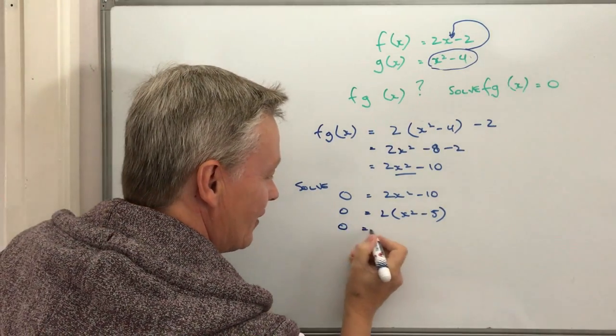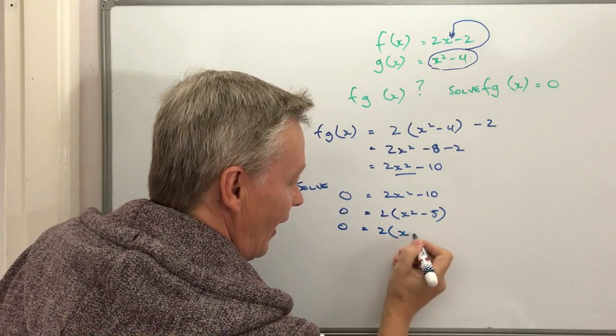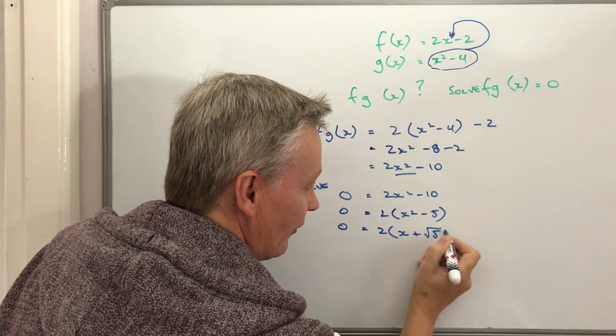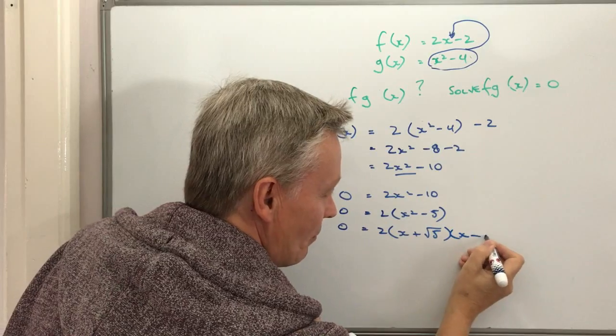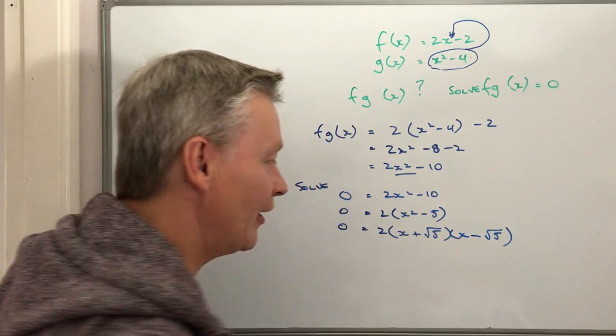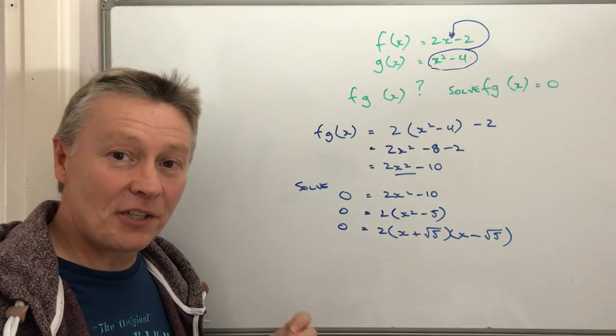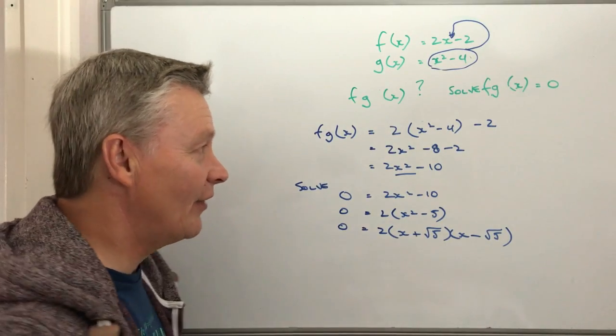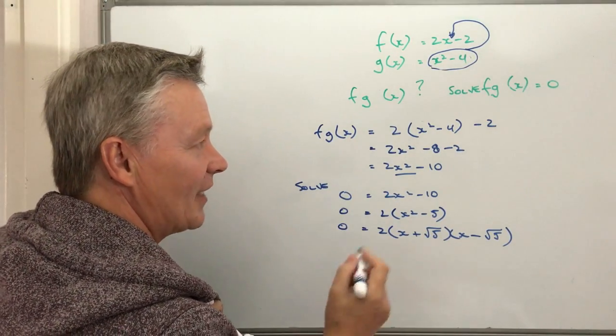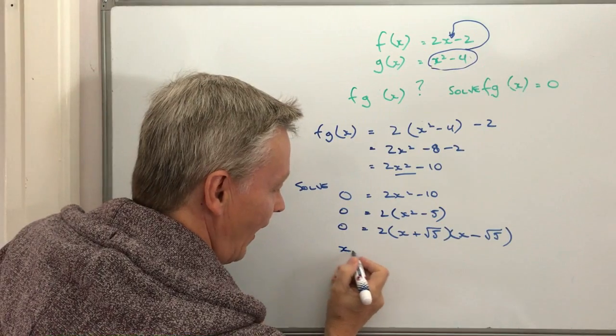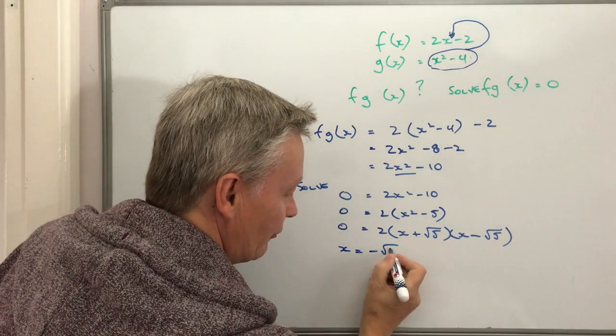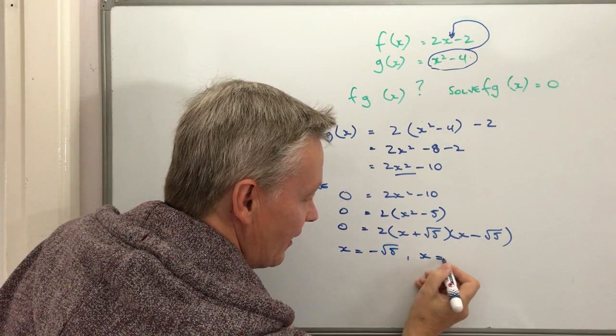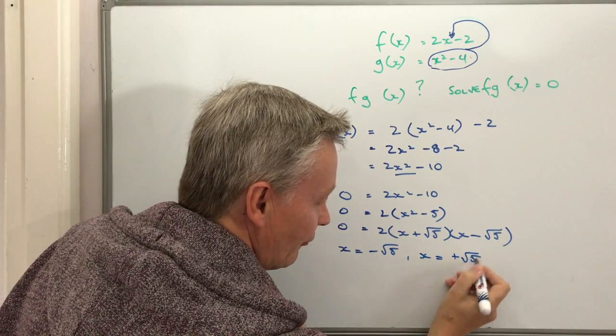But we'll have 0 equals 2 times (x plus root 5) times (x minus root 5). And that will allow me to solve for particular values of fg of x when they're equal to 0, where x equals minus root 5 and x equals positive root 5.